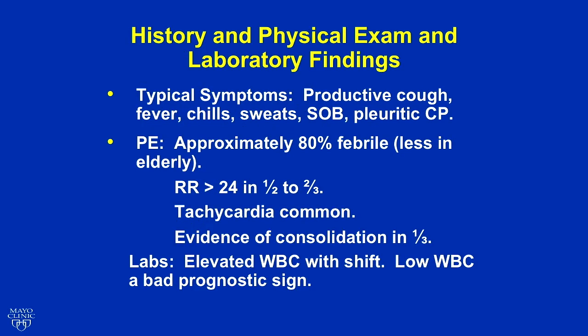The first stuff, which is really review for everybody, is the history and physical exam. Not every patient reads the book — they don't have the clean presentation you'd like. But typically: fevers, chills, sweats, productive sputum — yellow, green — shortness of breath, plus or minus pleuritic chest pain. Fevers, chills, sweats, productive sputum are really the key hallmarks. Again, not every patient gets them.